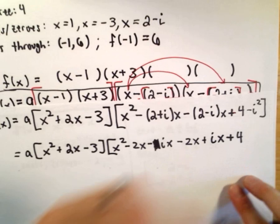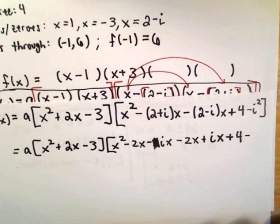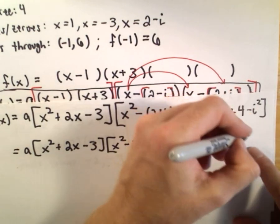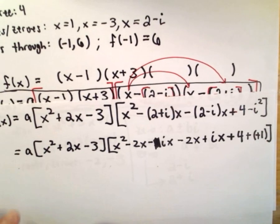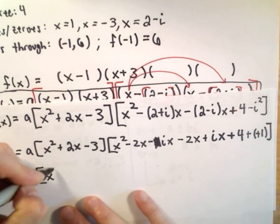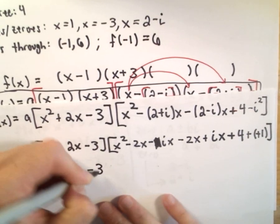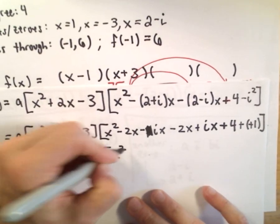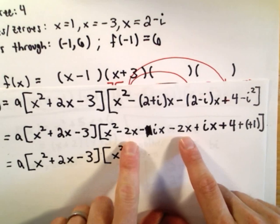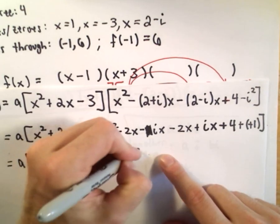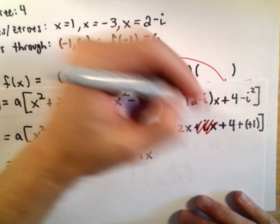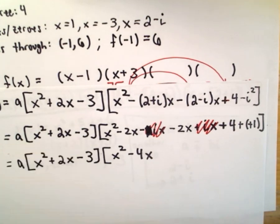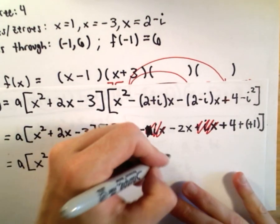We have plus 4, and minus i squared. Recall that negative i squared is the same thing as positive 1, because i squared is just negative 1. So combining: negative 2x and negative 2x gives negative 4x, the imaginary terms cancel, and 4 plus 1 gives plus 5. So the second pair simplifies to x squared minus 4x plus 5.